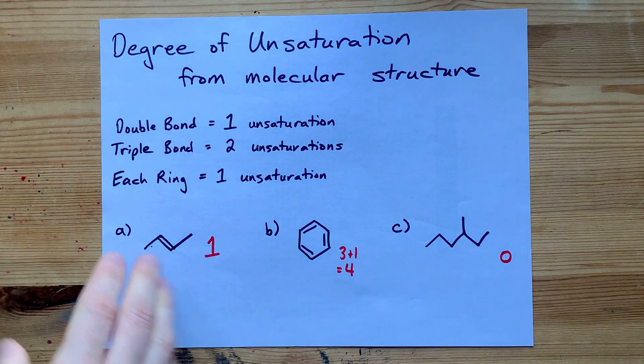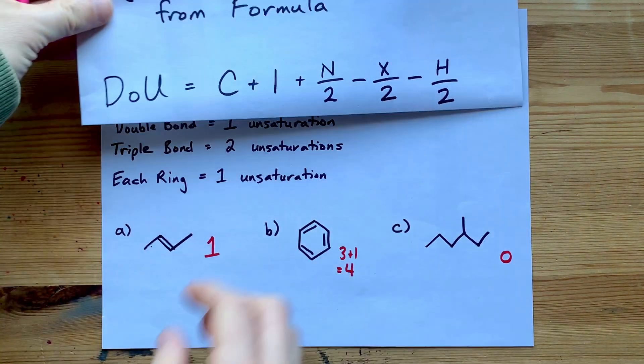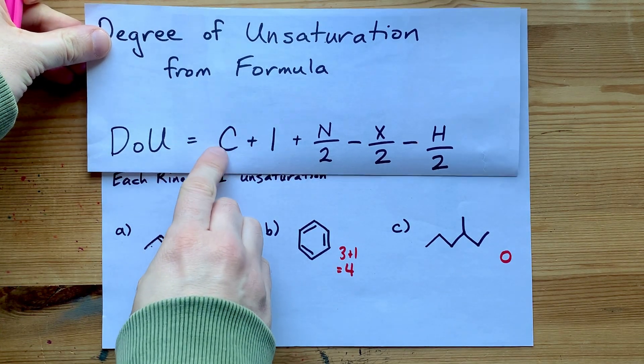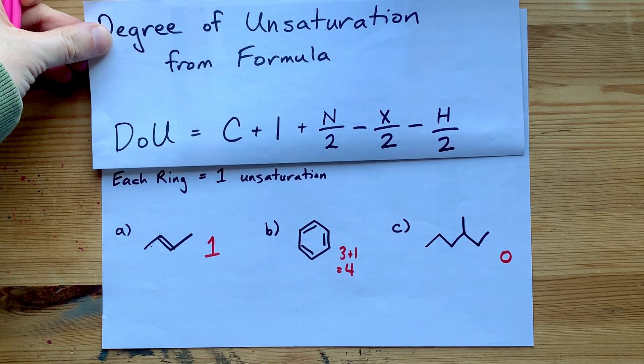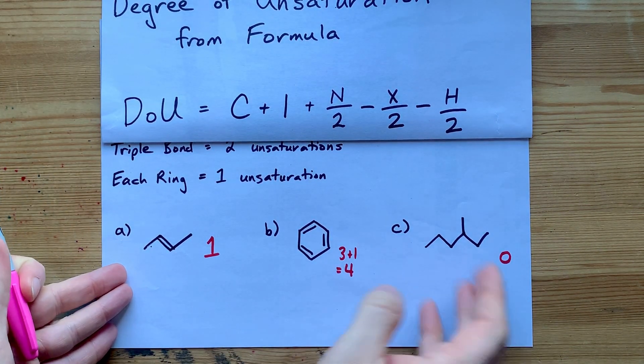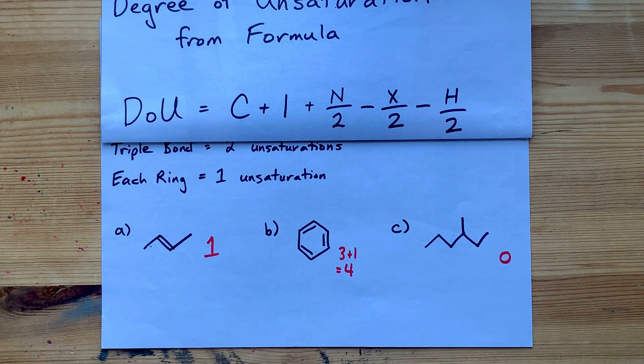Now, I'm also going to do this with the formula to emphasize to you that this works. This is number of carbons, number of nitrogens, number of halogens, number of hydrogens. Now, I didn't put nitrogen or halogens in any of these, but what can you do?